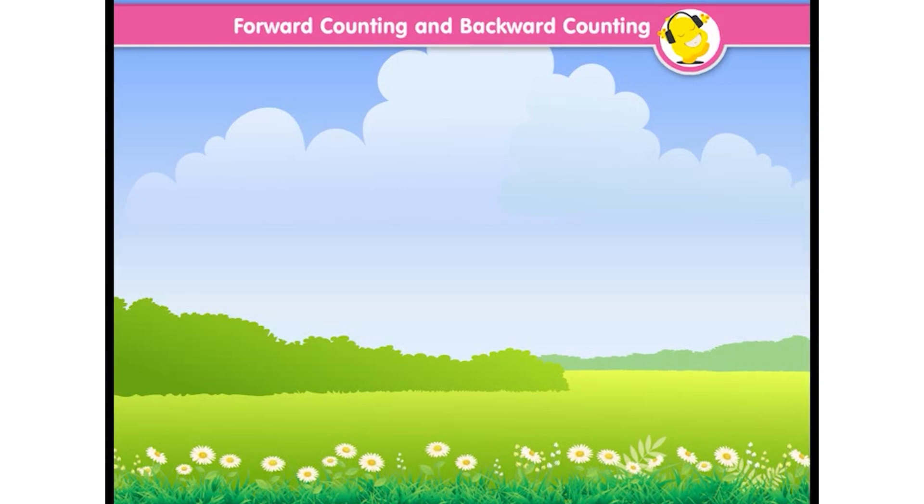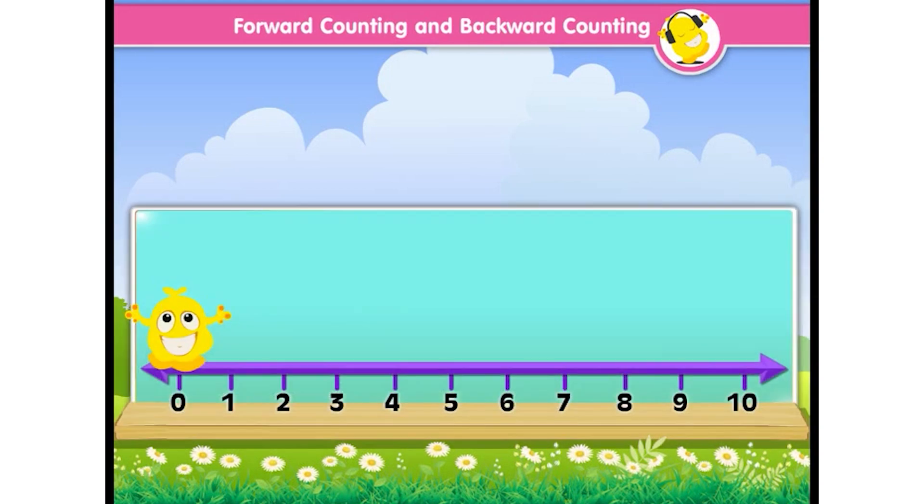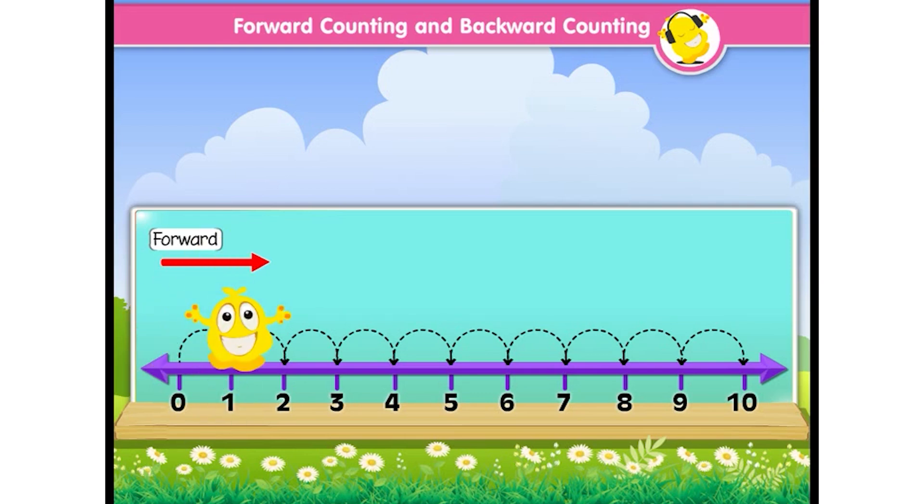Now let's learn forward counting and backward counting. Here, Popcorn is standing on number zero. He would like to reach number ten. How would he go? Simple, he will jump forward and count. Yes, one, two, three, four, five.